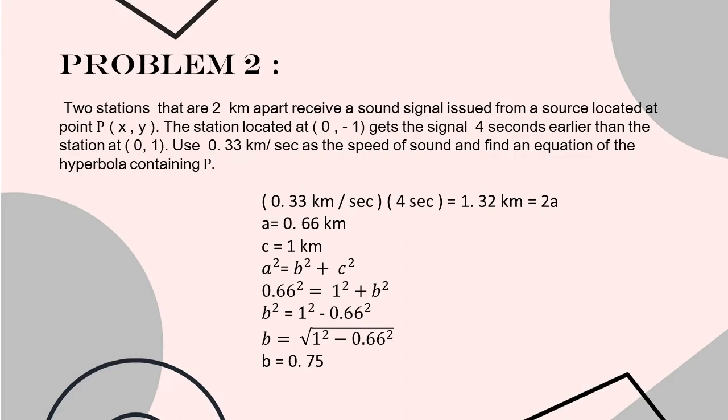Going back, we can see from the given above that our focus is 1. Hence, C equals 1. Now the only missing value to complete our equation is the value of B squared. Using the equation A squared equals B squared plus C squared, we can get the value of our B. Substituting the value of A and C to the equation, we get 0.66 squared equals 1 squared plus B squared. Since we are finding the value of B, our equation will be B squared equals 1 squared minus 0.66 squared. By extracting the square root, B equals the square root of 1 squared minus 0.66 squared. Now we have B equals 0.75.